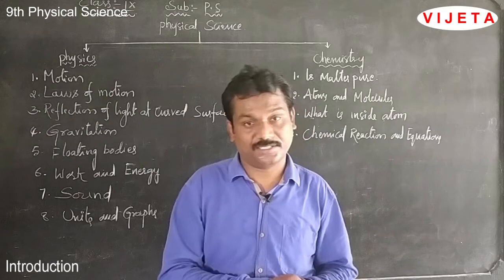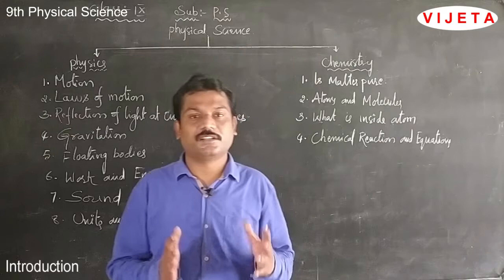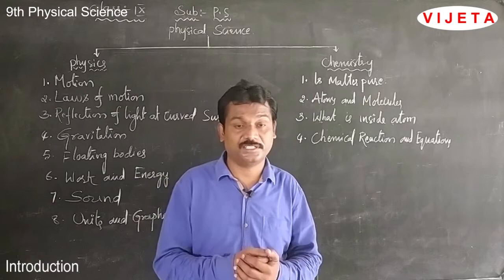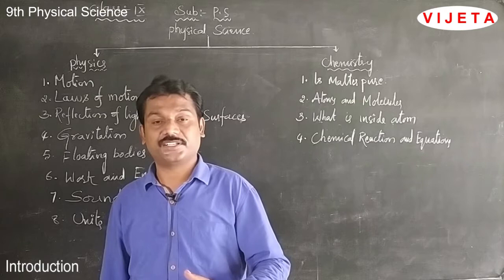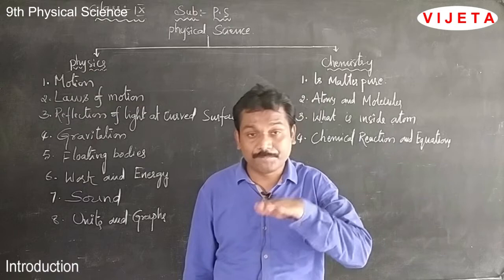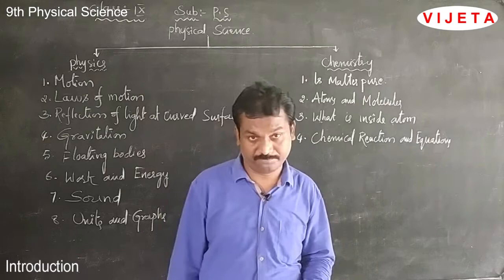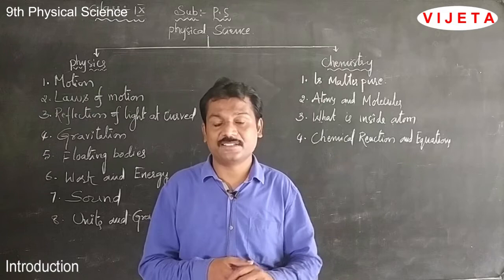Coming to the next chapter, reflection of light at curved surfaces. In 8th standard we discussed the phenomena of light; the first important phenomenon is reflection, which is a surface phenomenon. If light travels from one medium to another medium, after reflection it bounces back into the same medium — this is called reflection. In 8th standard we studied reflection on plane surfaces and proved the laws of reflection. In 9th standard we are going to discuss reflection on curved surfaces, where a curve is a part of a sphere.